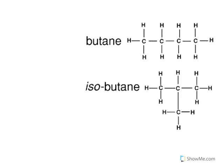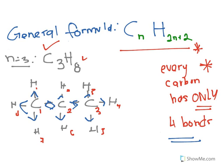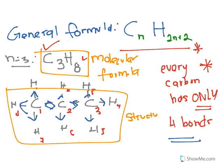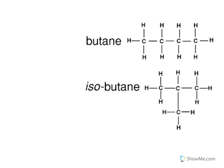Let's look at butane and isobutane. What I wrote on the previous slide — C3H8 — that is the molecular formula. Molecular formula is basically only composed of alphabets and numbers. But the drawn structure is called the structural formula. Molecular formula only tells you the composition of your molecule, but structural formula tells you the bonding pattern in the molecule.